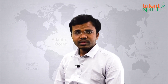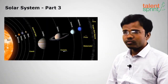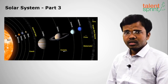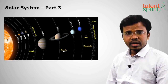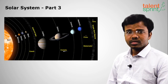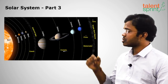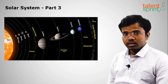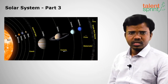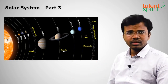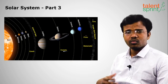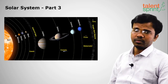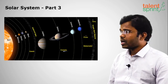Hello everyone, welcome to Talent Sprint. In this session of geography, we shall discuss the last part of the solar system. We have already discussed the eight planets and asteroids, and now we shall discuss some more things present in the solar system, along with a glossary of solar system terms regularly asked in general studies examinations — like auroras, causes, pulsars, etc.